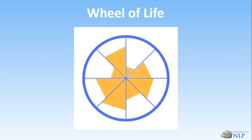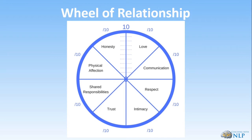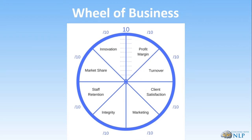That's the wheel of life — it's about balance, and let's not travel through life with a wheel looking like this. However, you can also use this for a wheel of relationship — these are just some elements, and the client can choose their own. If doing this for a business client, you could use a wheel of business — again, just elements you can add your own — and the client will measure themselves in each of those areas.